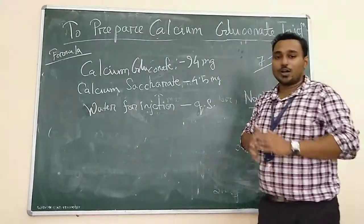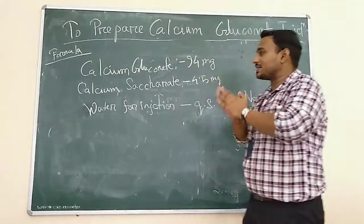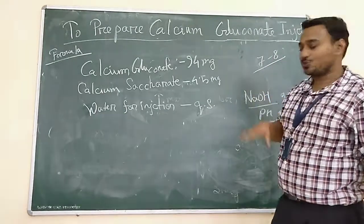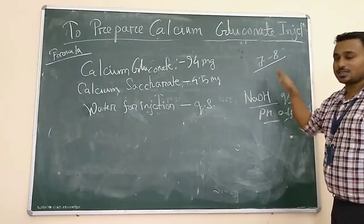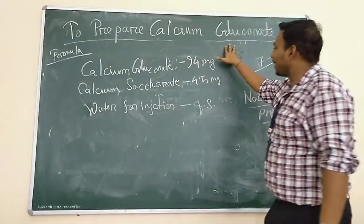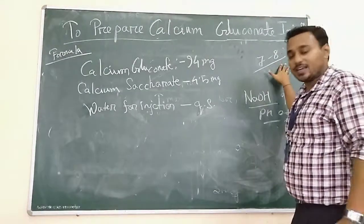For maintaining and stabilizing the pH, we use sodium hydroxide solution. The pH range of the calcium gluconate injection is between 7 to 8.